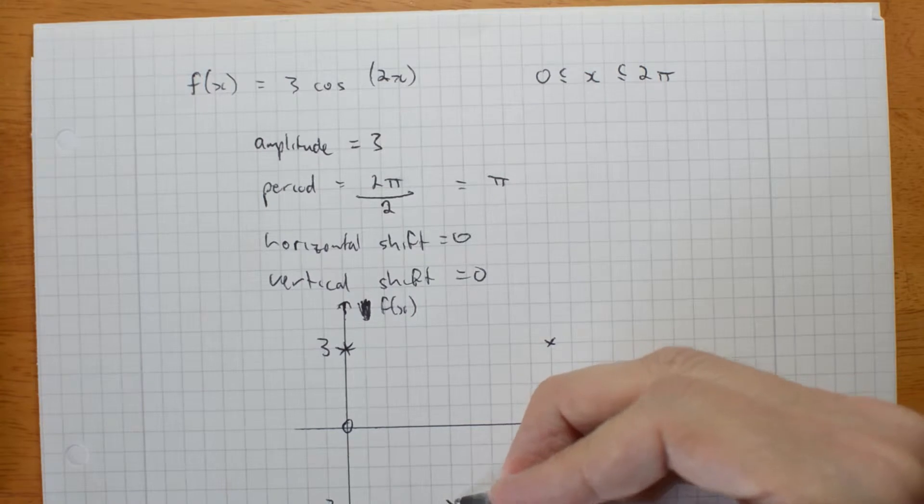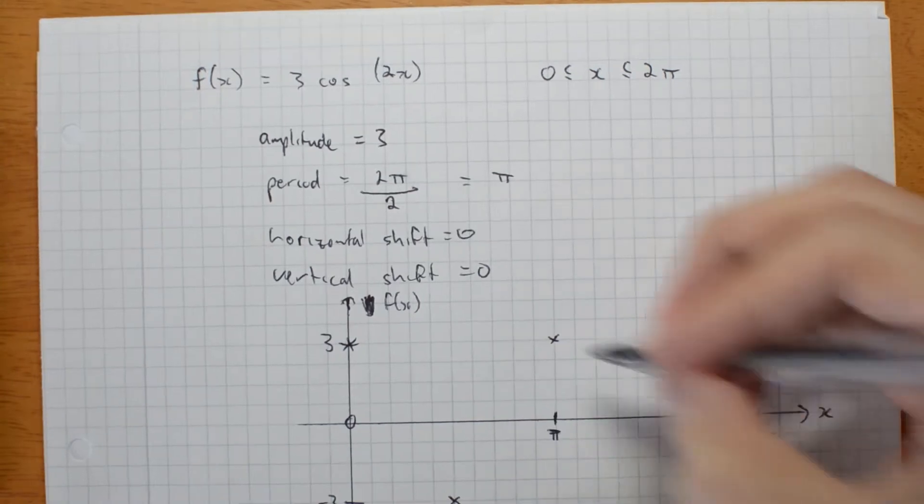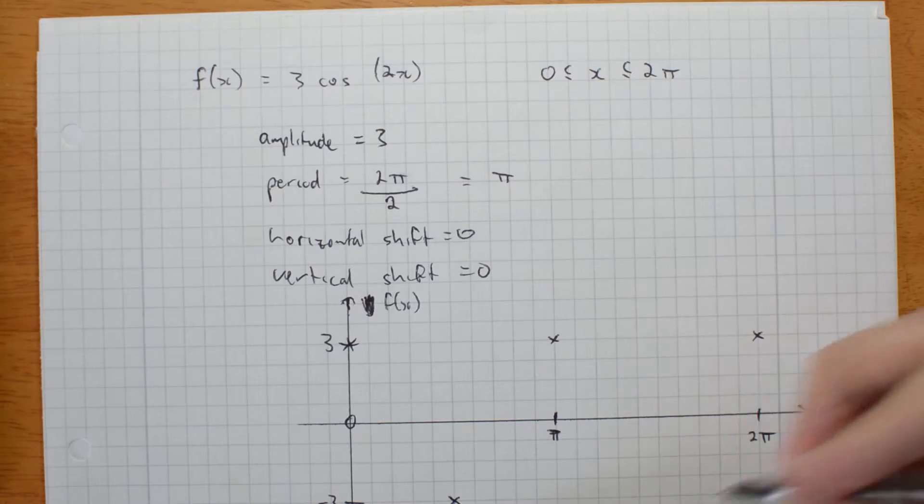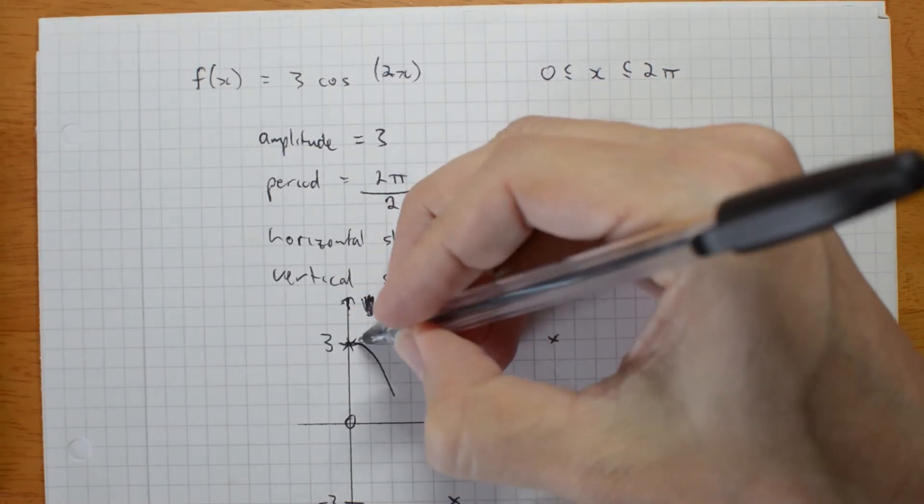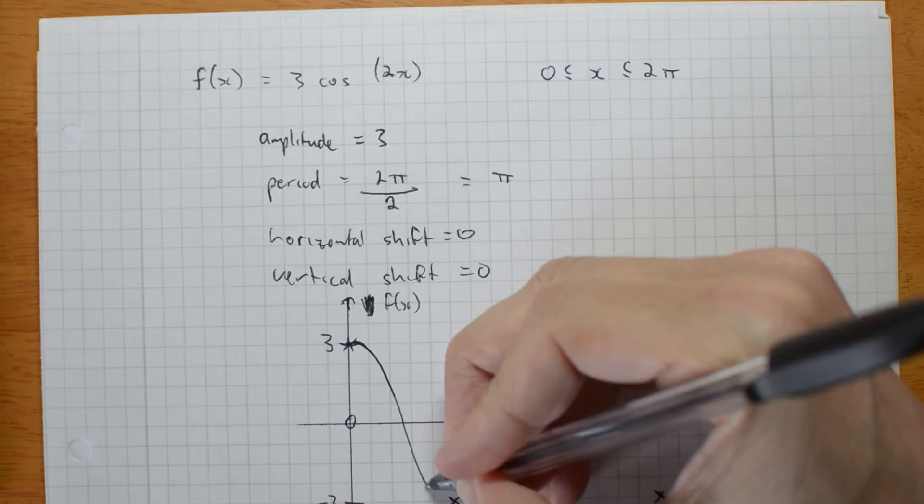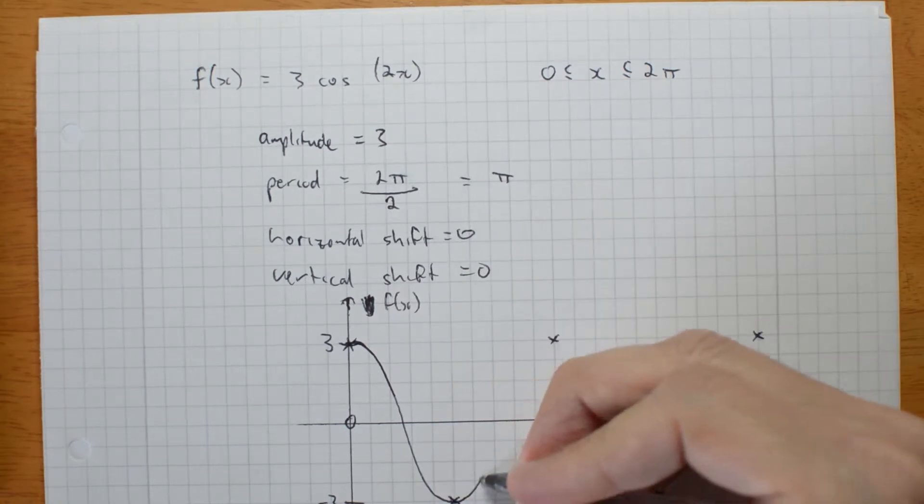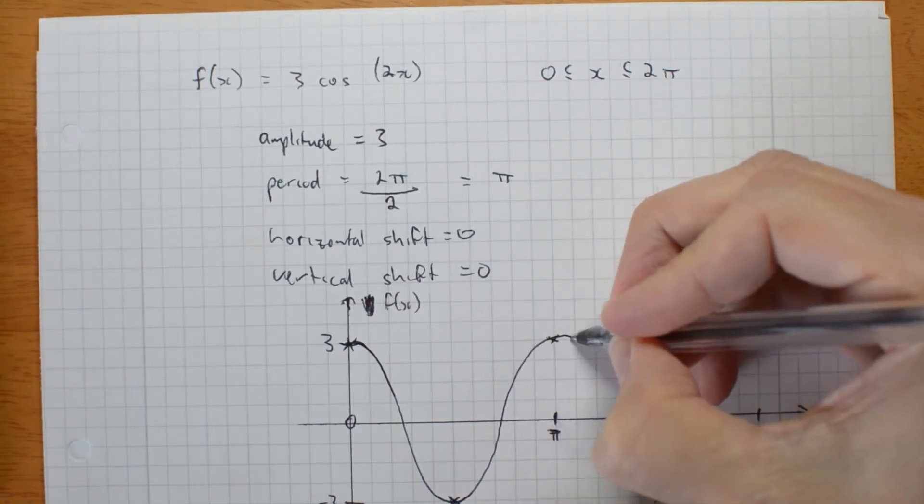Halfway along, it's going to be at the bottom. And then the same thing's going to happen here, because it's periodic. We're going to go back down to the bottom halfway along, and back to the top. So I can actually now put in my curve, if I'm careful. I can actually sketch in the curve already, like so.